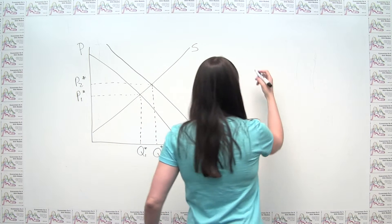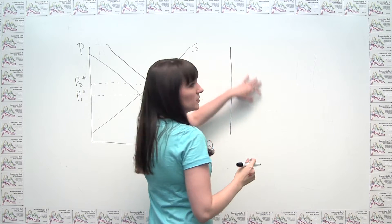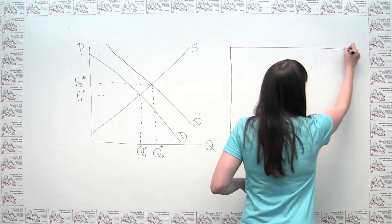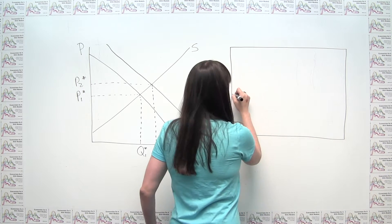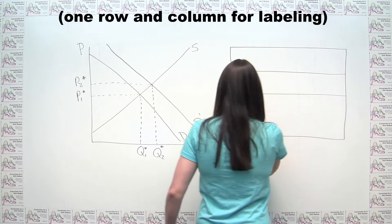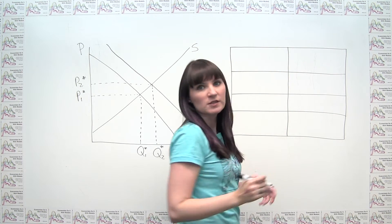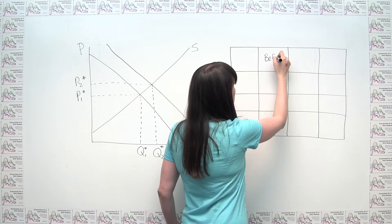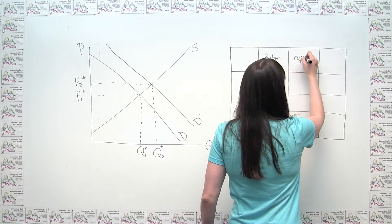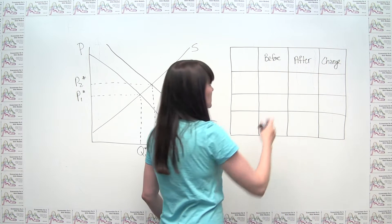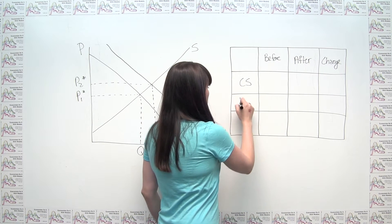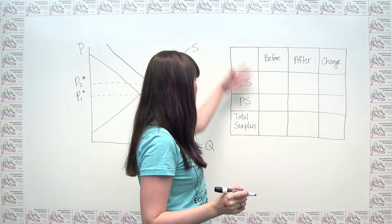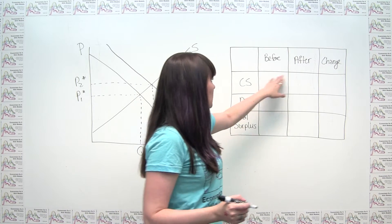We want a table that has consumer surplus, producer surplus, and total surplus — sometimes called social surplus, same idea, it's just the surplus for everybody affected by the market. Then columns for before, after, and change. So really what I want is a 4x4 table. I'll draw it out now — I think it's helpful for you to actually see the process. So: before the demand increase, after, and change. And then consumer surplus, producer surplus, and total surplus.